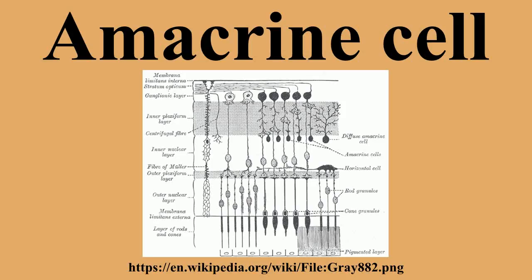Amacrine cells are interneurons in the retina. They are named from the Greek roots meaning 'without long processes,' because of their short neuritic processes. Amacrine cells are inhibitory neurons and project their dendritic arbors to the inner plexiform layer. They interact with retinal ganglion cells and/or bipolar cells.